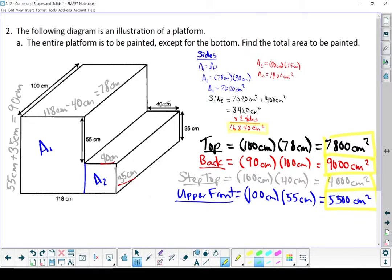And last but not least, we've got this lower front face. This face right here. That's also 100 centimeters wide and 35 centimeters tall for a total surface area of 3,500 square centimeters.